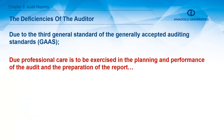Regarding the content of the auditor's opinion, we must follow the international standards of auditing, ISA 700. The required content includes: opinion, basis for opinion, independent auditor's opinion, material uncertainty related to going concern, key audit matters, responsibilities of management and those charged with governance for the financial statements, auditor's responsibilities for the audit of the financial statements, and the signature, date, and address.